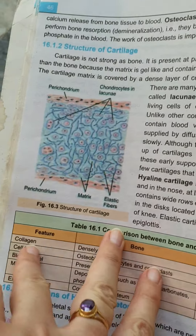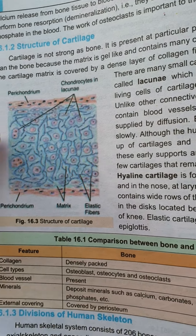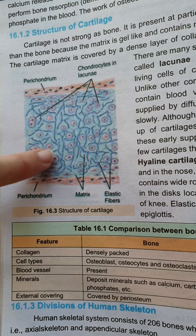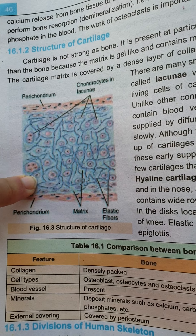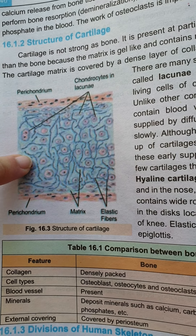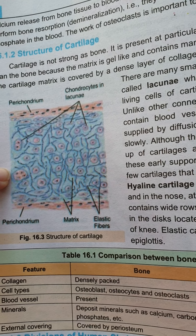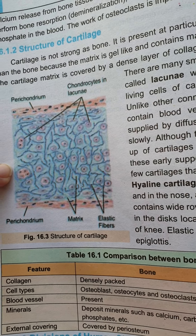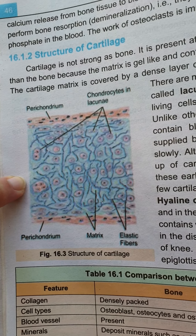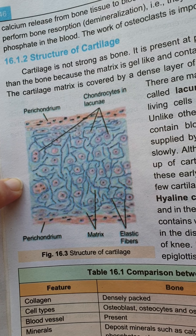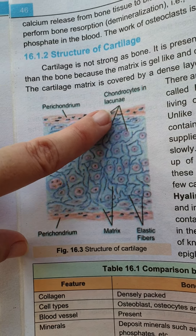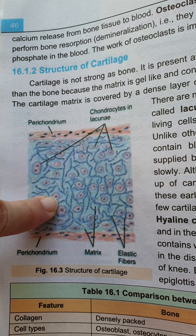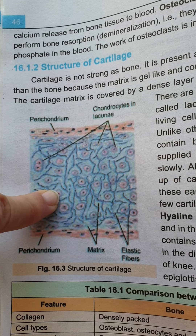Now we come to the structure of cartilage, which was already covered in 10th class. Cartilage and bones have differences: bones are hard while cartilage is not as hard; bones have blood vessels while cartilage has none. Cartilage is not present throughout the body like bones — it is present at specific sites. However, it also provides support to the human body along with bones. Inside the cartilage there is a fluid known as matrix.